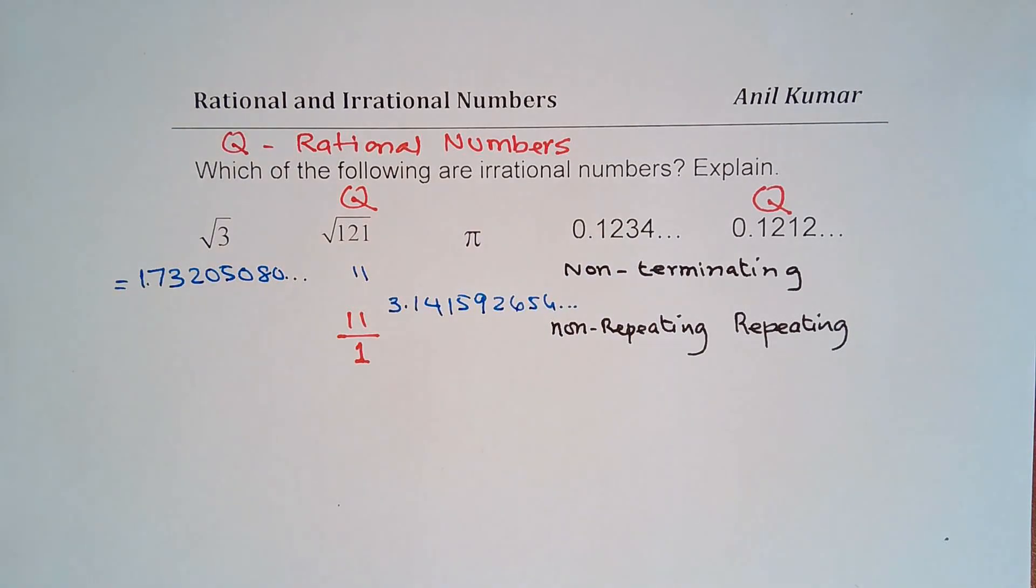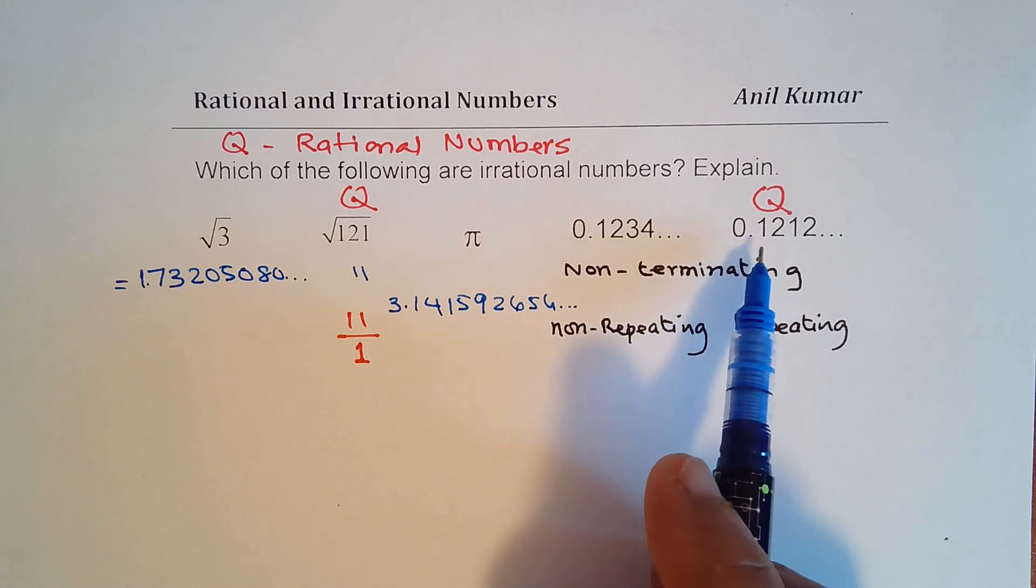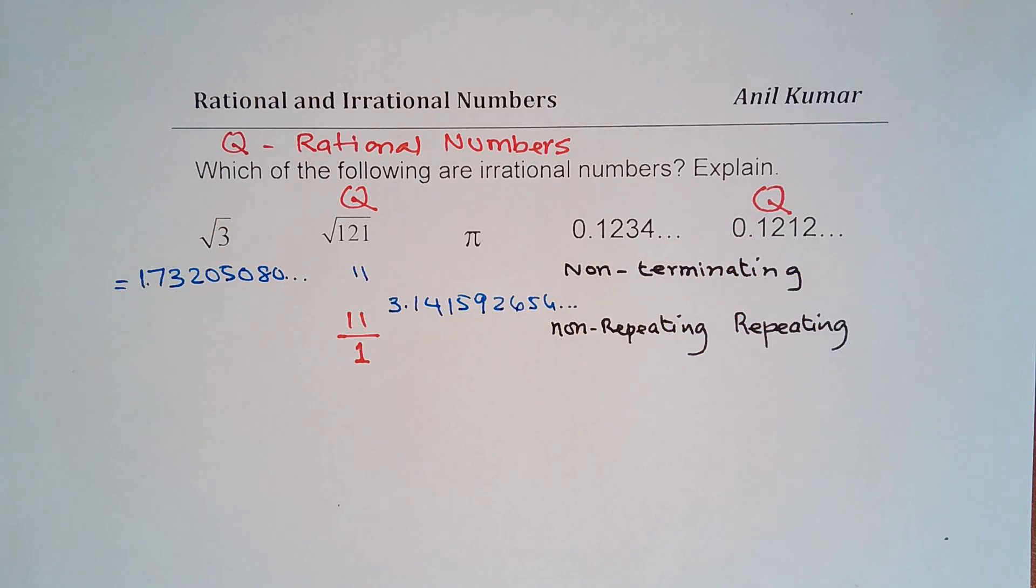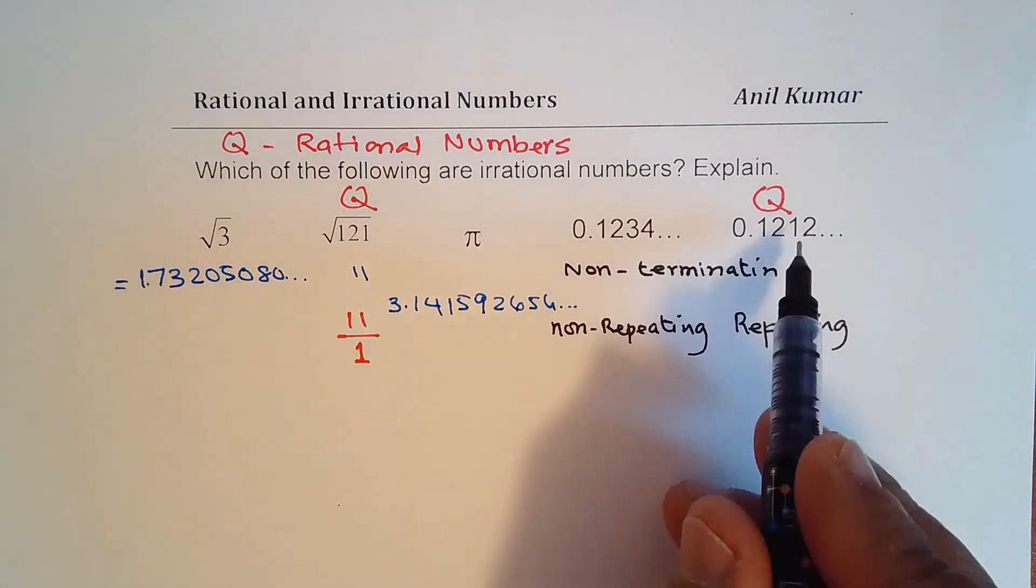The last number here is 0.1212. We see there is a pattern 1212 which repeats. So we know the repeating pattern. Since we know the repeating pattern, we can write this as a rational number. Now in this exercise, let us see how to write it as a rational number.